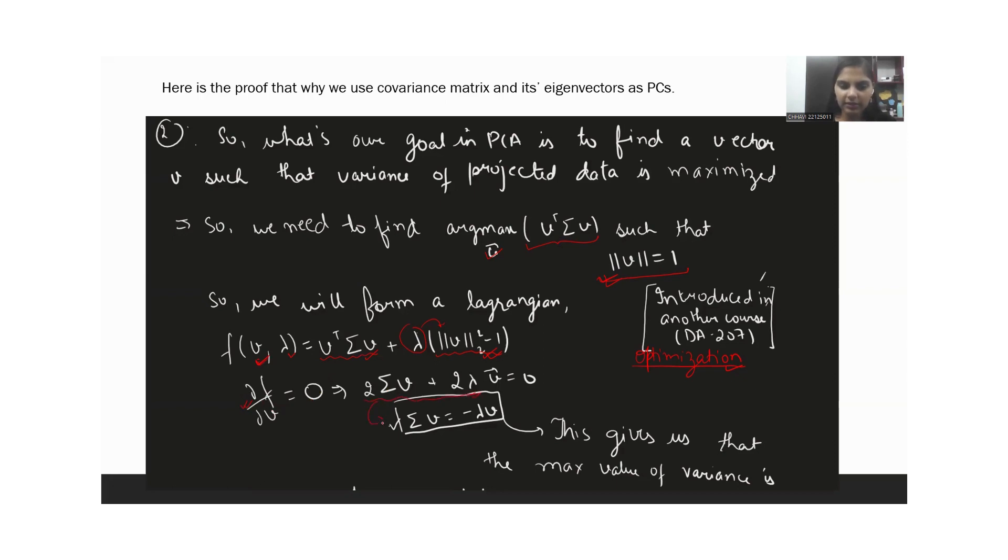And from here we will get this. We can see that the covariance matrix Sigma times V would be minus lambda V. So we can see that the V vector that we want would be the eigenvector of Sigma.